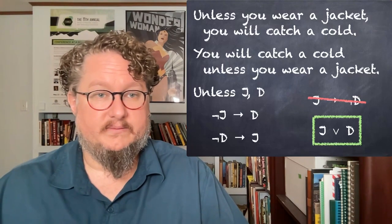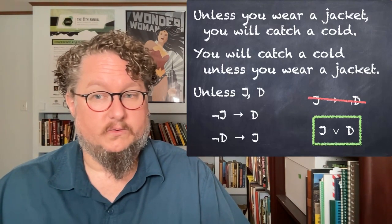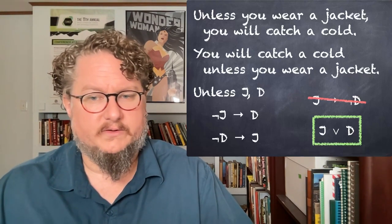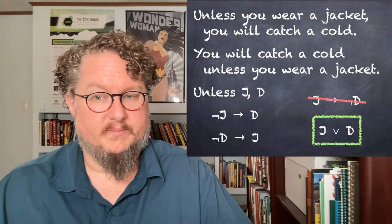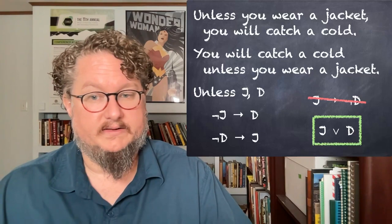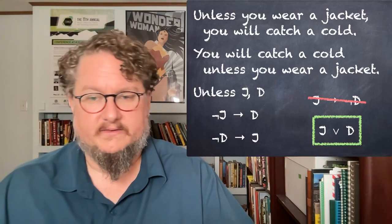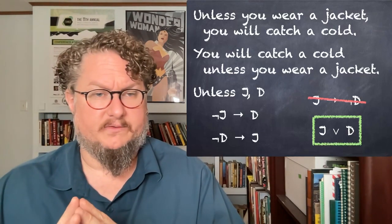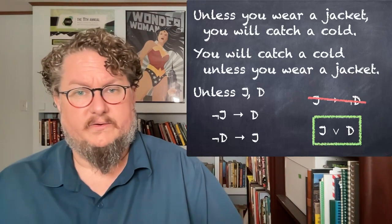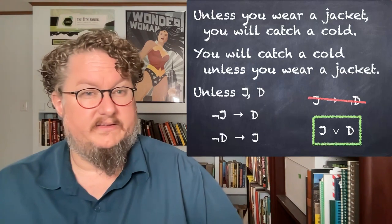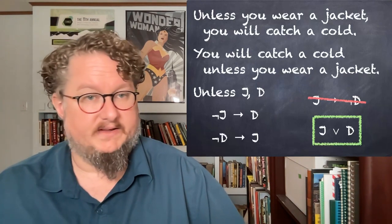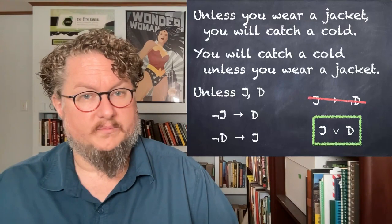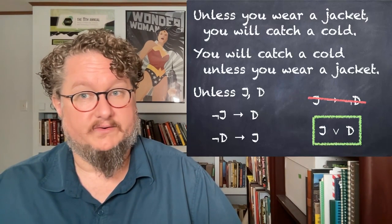Now, as Magnus says in the textbook, you might worry that the 'or' here should be an exclusive or. But the sentences actually don't exclude the possibility that you might have both — you might wear a jacket and catch a cold. Jackets don't always protect you from all the ways you might catch a cold, so an inclusive 'or' will do it. This is the easiest way to remember an 'unless' statement — you don't have to worry about the order of statements as you do with conditional forms, and since they're all equivalent, it's a fine way to translate it.